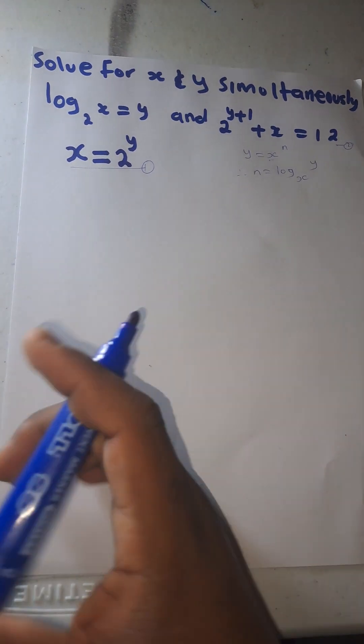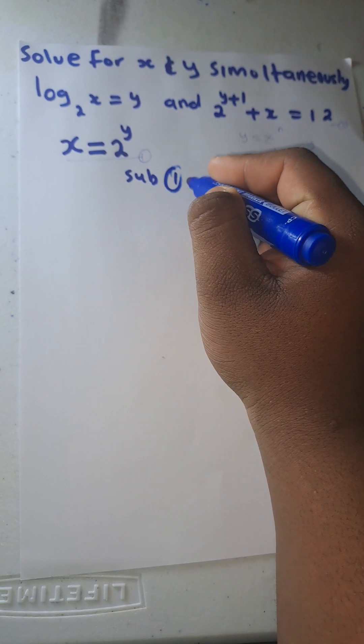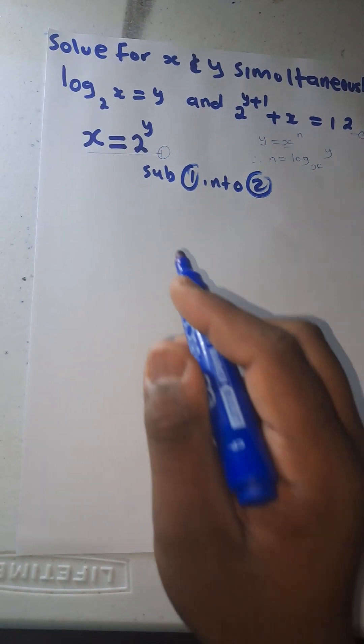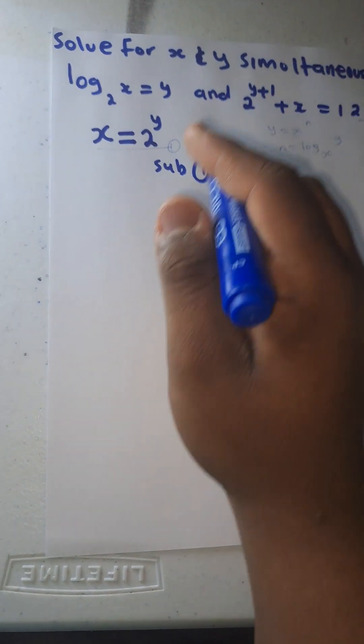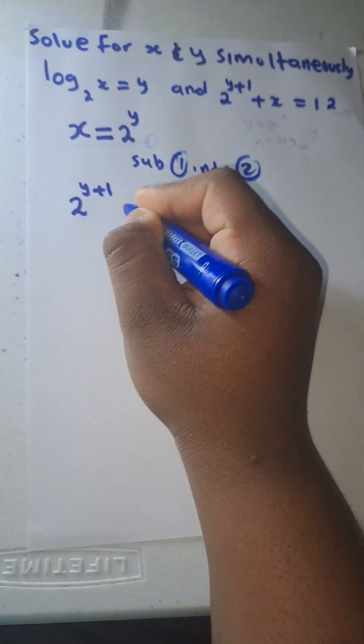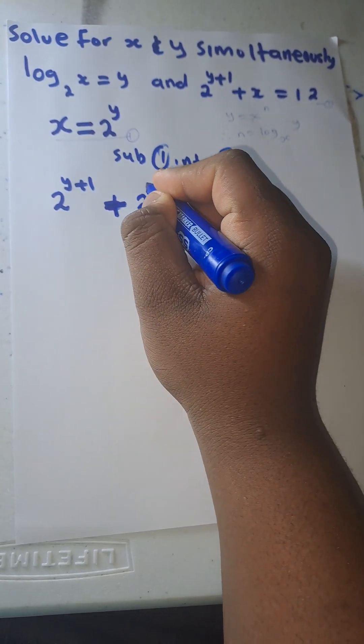Now let's substitute equation 1 into 2. So now where there is x, I'm going to put 2 to the power y. So it's gonna be 2 to the power y plus 1 equals 2.